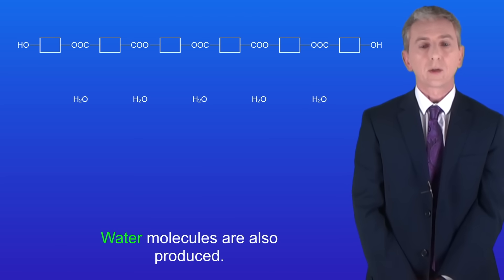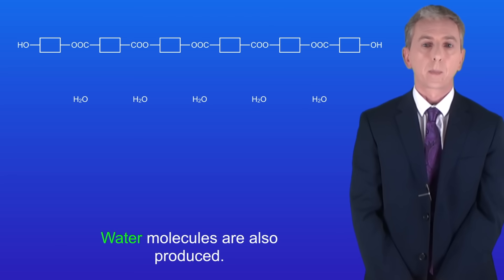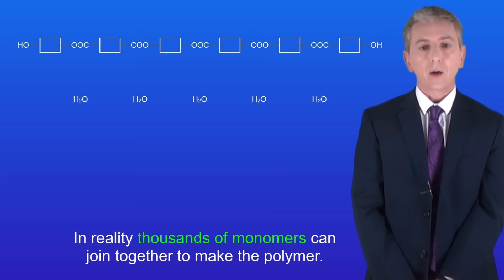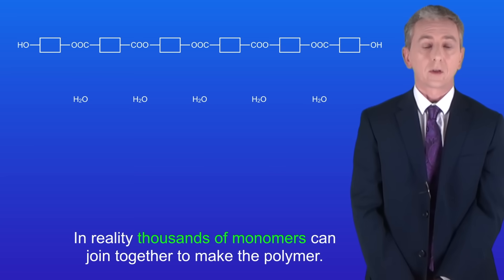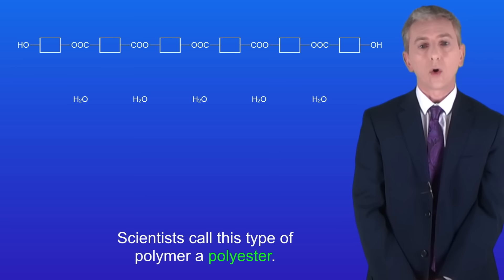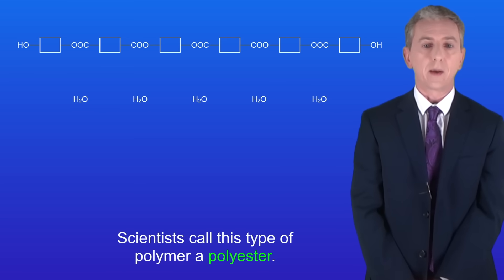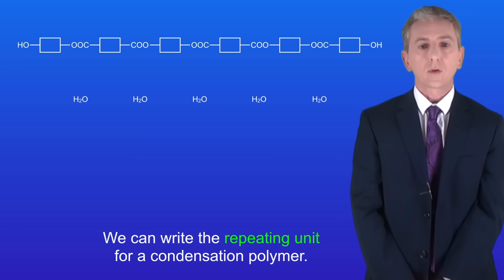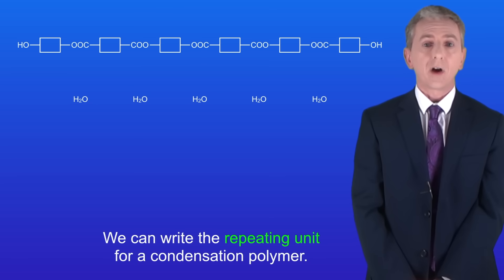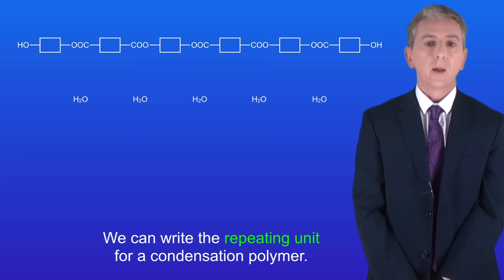Remember that water molecules are also produced throughout this process. In reality thousands of monomers can join together to make the polymer, and scientists call this type of polymer a polyester. Just as we saw for addition polymers, we can write the repeating unit for a condensation polymer, though this is a bit more tricky.